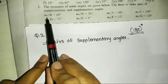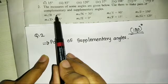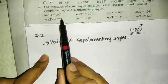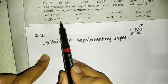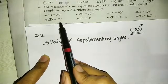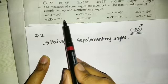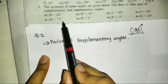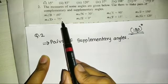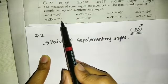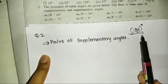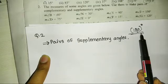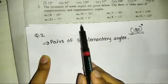The measurement of angle B is 60 degrees and the measurement of angle D is 75 degrees. What is the addition of this? 135 degrees. That is not 180 degrees.